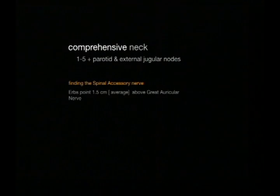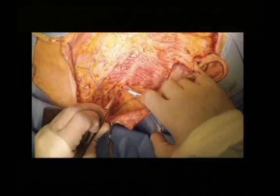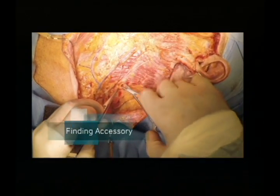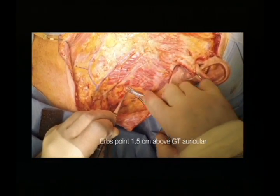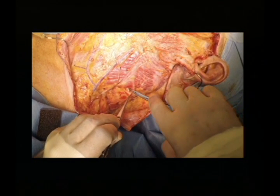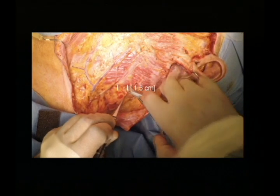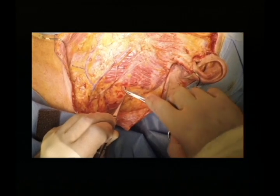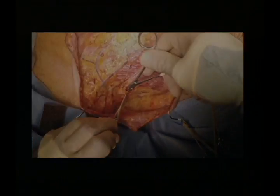The next step is finding the spinal accessory nerve, and there are a number of ways of doing that. In particular with the posterior dissection, we go for Erb's point, which is a lot more reliable than you think — approximately 1.5 to 2 centimetres above the great auricular nerve. With a couple of spreads of the hemostat you can find the nerve. The nerve is then traced, allowing parotid dissection, posteriorly back towards the trapezius using a hemostat.